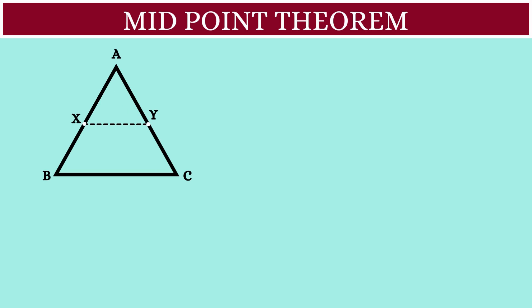So the midpoint theorem says that this line XY will always be parallel to the third side which is BC. Also, the length of XY will be half of the length of BC.